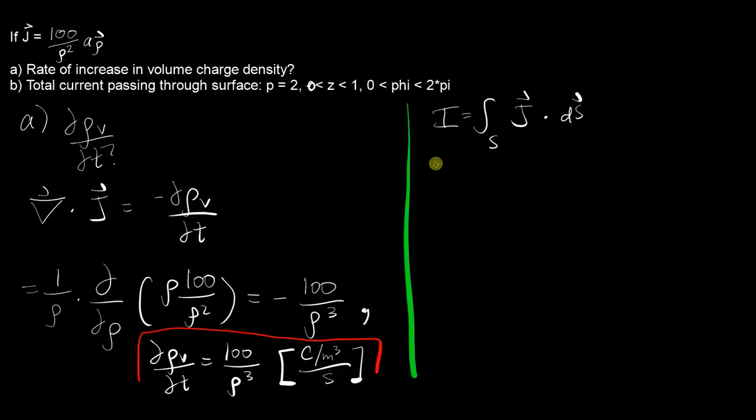So here the surface describes where rho is equal to two. Plugging things in, the surface integral's bounds will be from z equals zero to one and from phi equals zero to two pi. We'll dot J with ds here.